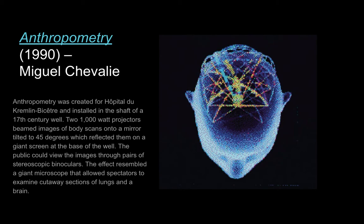One final example for today's lecture is Anthropometry from 1990 by Miguel Chevalier. Anthropometry was created for Hôpital du Kremlin-Bicêtre and installed in the shaft of a 17th-century well. Two 1,000-watt projectors beamed images of body scans onto a mirror tilted at 45 degrees, which reflected the images onto a giant screen at the base of the well. The public could view the images through pairs of stereoscopic binoculars, and the effect resembled a giant microscope that allowed spectators to examine cutaway sections of lungs and the brain.